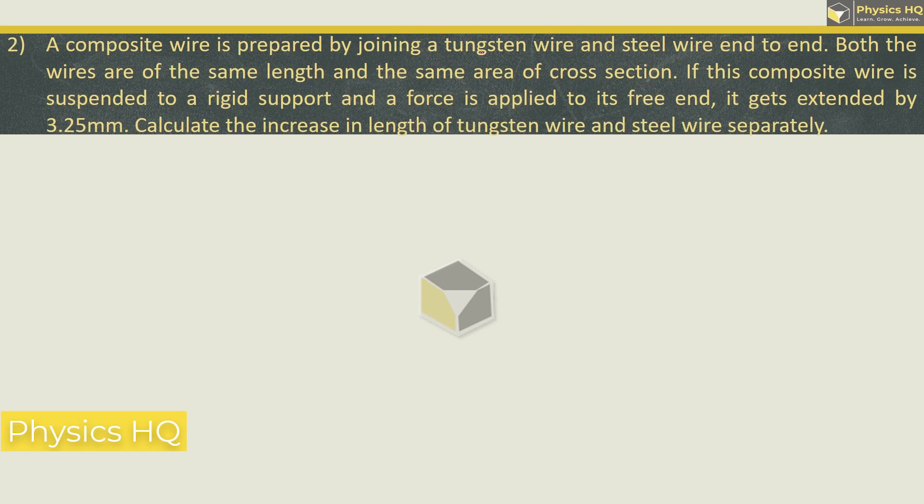A composite wire is prepared by joining a tungsten wire and a steel wire end to end. Both wires are of same length and same area of cross section. If this composite wire is suspended to a rigid support and a force is applied to its free end, it will be extended by 3.25 mm. Calculate the increase in length of tungsten and steel wire separately. We know Young's modulus is F × L / (A × l). The force is common.